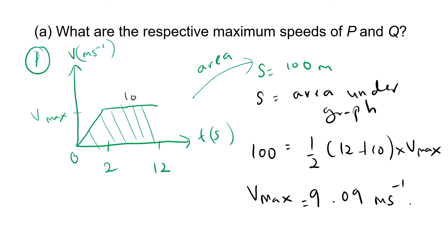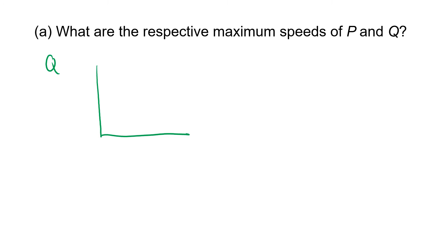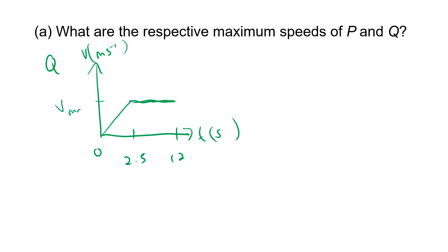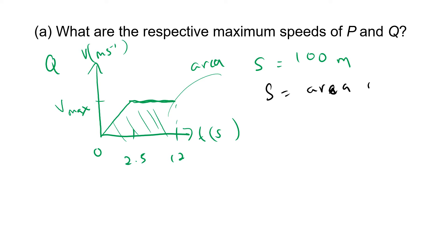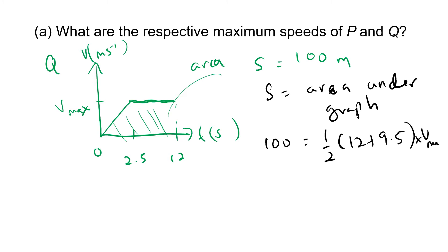For runner Q, we plot another v-t graph. The known times are 0, 2.5, and 12 seconds. Q accelerates from 0 to 2.5 seconds then maintains speed. Again, area under the graph equals displacement = 100 m. The trapezium gives: 100 = ½ × (12 + 9.5) × v-max. So v-max for Q = 9.30 ms⁻¹.